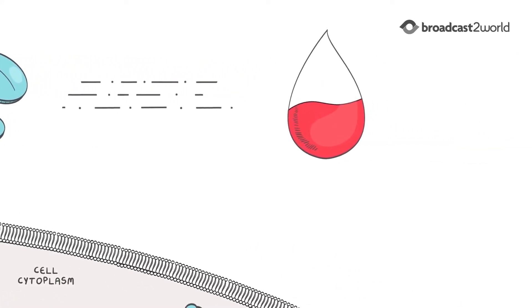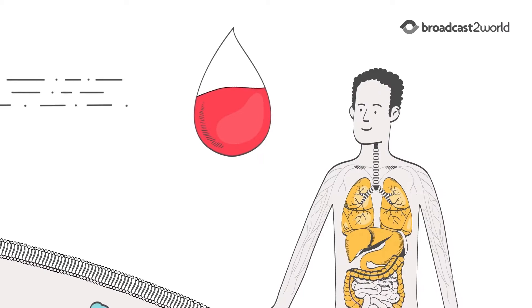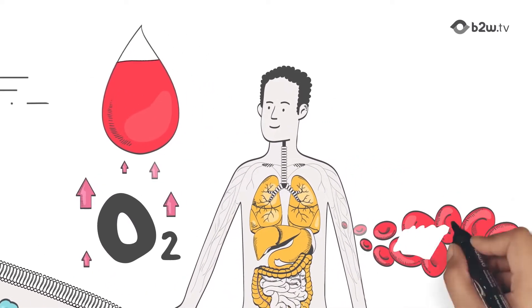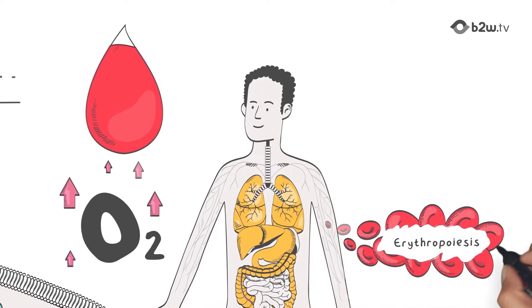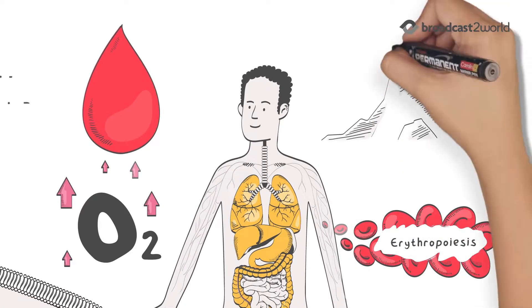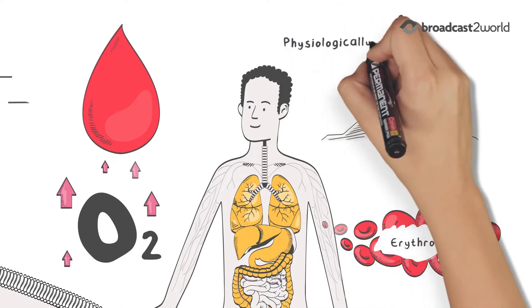This video will help you understand how the body naturally responds to low oxygen supply and enhances oxygen delivery by increasing erythropoiesis. Understanding this response provides us with the potential to treat anemia more physiologically and naturally.